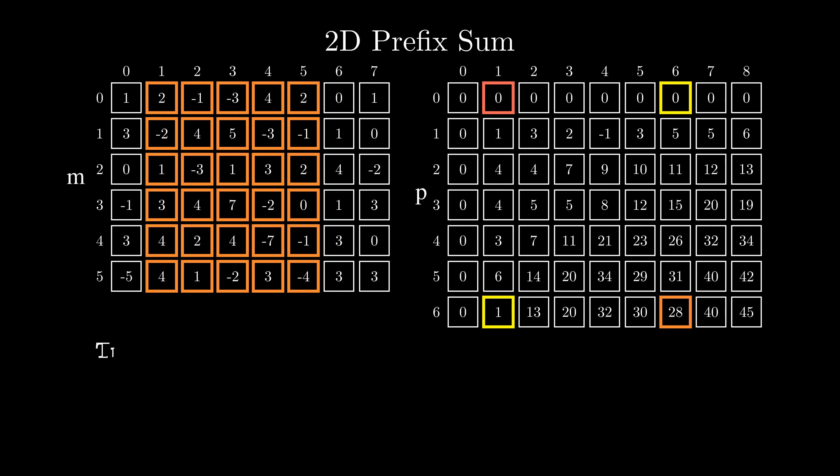So in total, we perform rows times columns operations to calculate the prefix summary while also using rows times columns additional memory to store the array and can answer any query in O(1) time. So this makes the time complexity O(rows times columns plus the number of queries) and the memory complexity O(rows times columns).